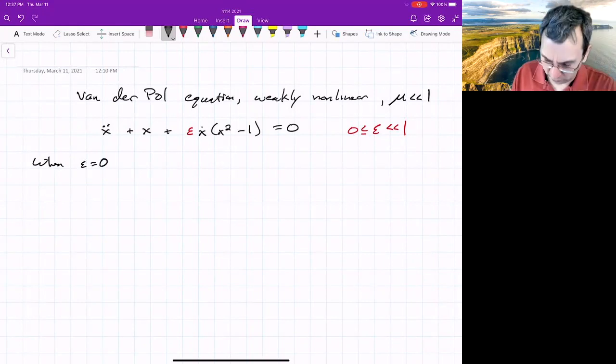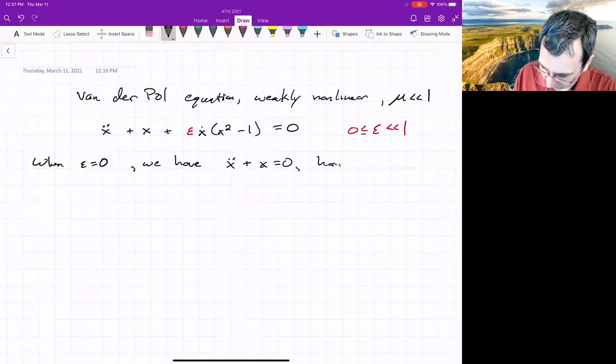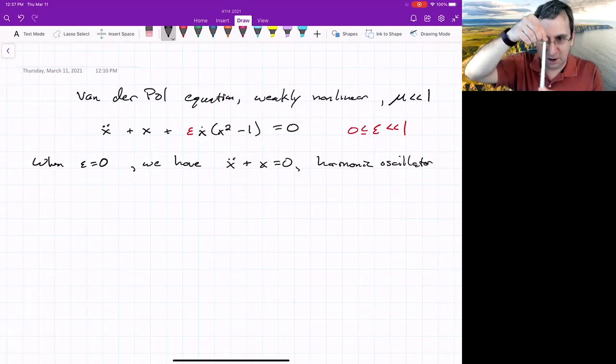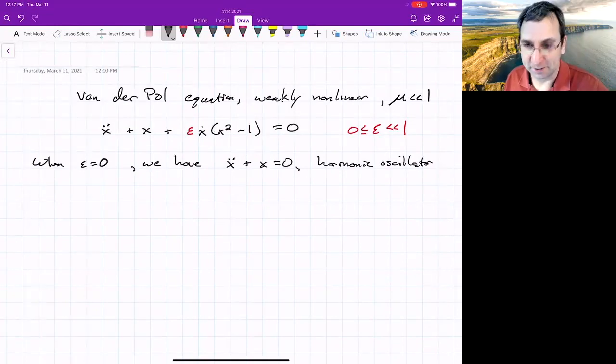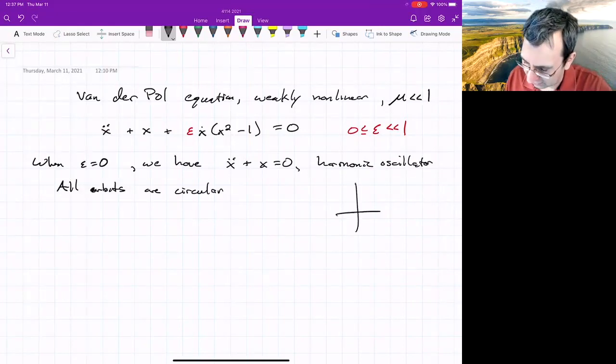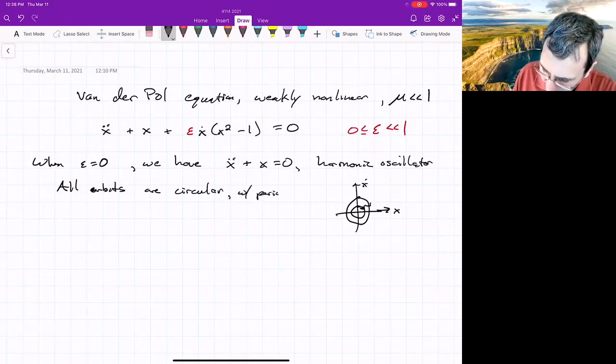If we look at this system when epsilon equals zero, we have a harmonic oscillator: x double dot plus x equals zero. This describes a pendulum near the bottom position. All orbits are going to be circular, period two pi. It looks like a spring normalized appropriately so that we have coefficients of one. In fact, the phase plane of x and x dot is filled with orbits. No matter where you begin, you're going to be on some kind of orbit going around the origin, and they all have a period of two pi.